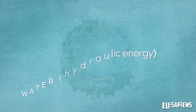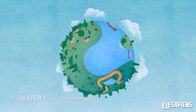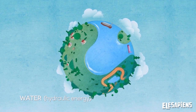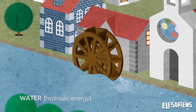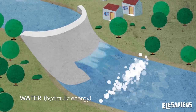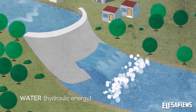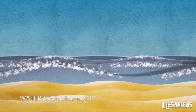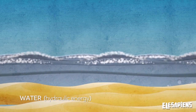There are very large bodies of water on Earth. Hydraulic energy uses the power of moving water to produce energy, like from a waterfall, or from a wave, or from other moving water.